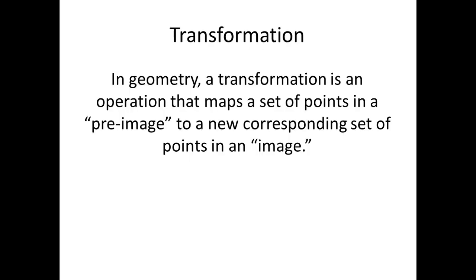So what is a transformation? In geometry, a transformation is an operation. It means like a function or some mathematical operation that you're going to perform on a set of points. And it maps a set of points in a pre-image to a new corresponding set of points in an image. So again, this is where it's applicable in crystallography if we're mapping atoms in a lattice to another point in the lattice. Or maybe we're doing a reflection over a mirror plane. So we start with a pre-image and we move it into a corresponding set of points in an image.